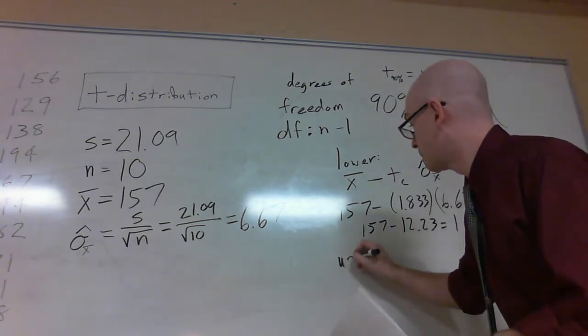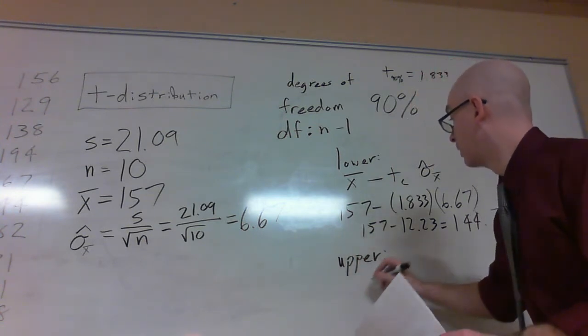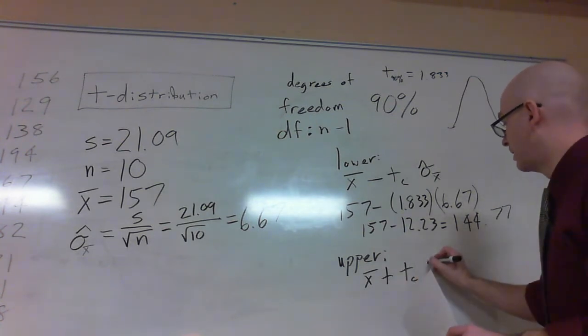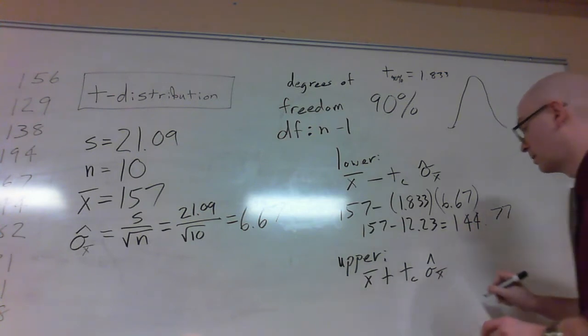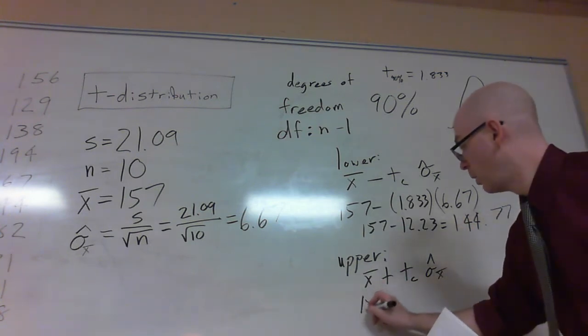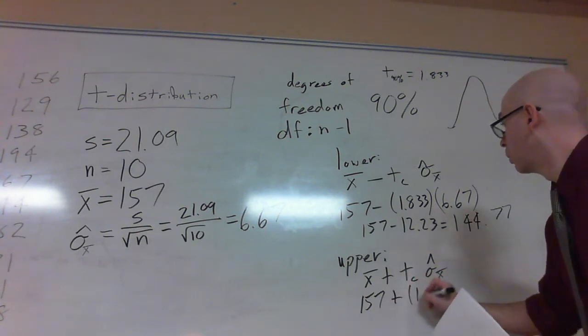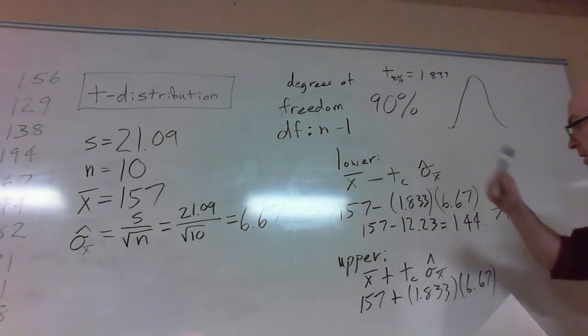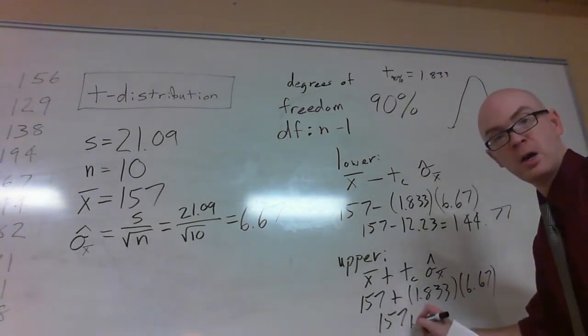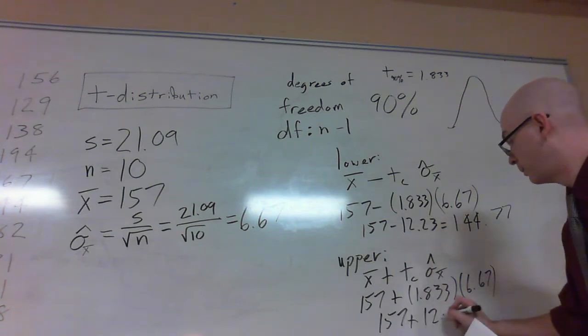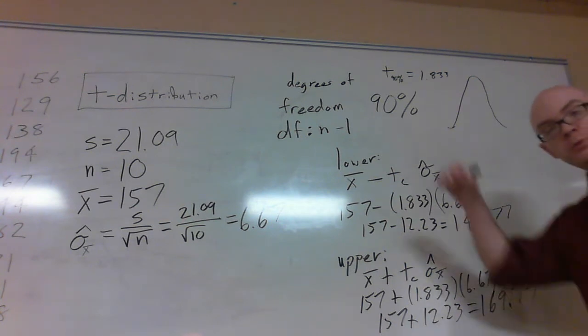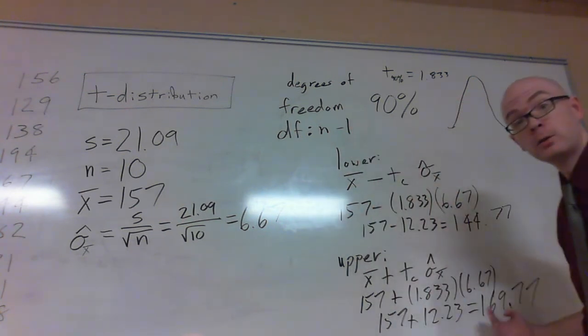Now my upper is pretty much set up the same way. I go x-bar plus my t and then my standard error. Now plug in 157 plus 1.833 times 6.67. Just like I did up there. This becomes 157 plus 12.23 as opposed to minus, which gives me 169.77. Drop the marker, and you are done.